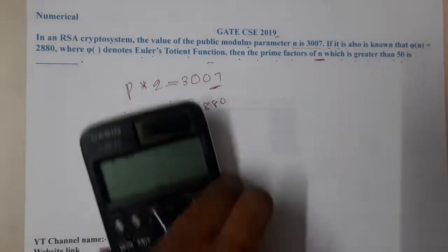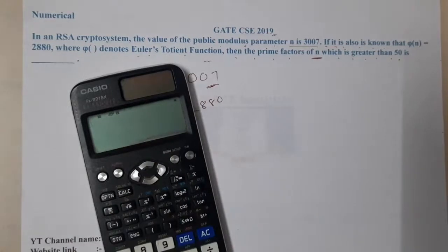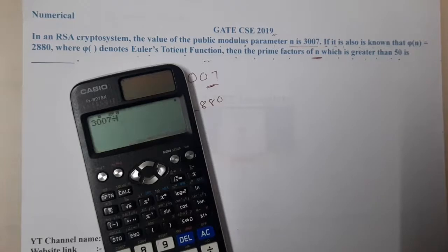So let me start trying it. So 3007. If I divide it by 3, I will not get the result. If I divide it by 4, I will not get the result.